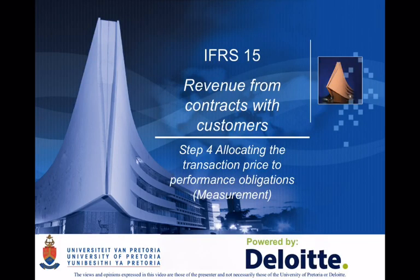This video considers the final two steps in the five-step approach to accounting for revenue as determined by IFRS 15. Up to this point, you would have considered whether there is a contract with a customer, analyzed that contract to determine the performance obligations, and then calculated the transaction price.